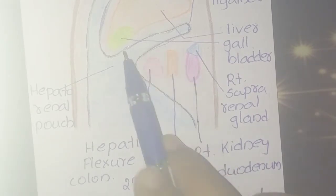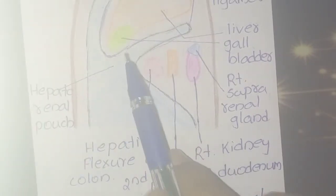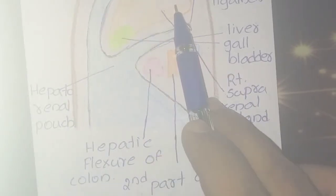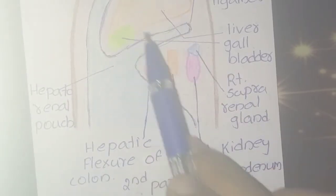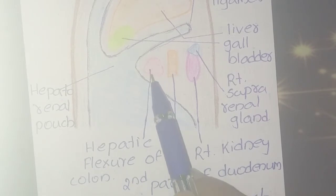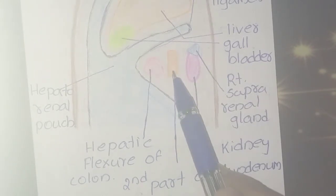Anteriorly, it is bounded by the inferior surface of the right lobe of the liver, which we can see here, and the gallbladder. On the posterior side, it is the hepatic flexure of the colon, which is here.